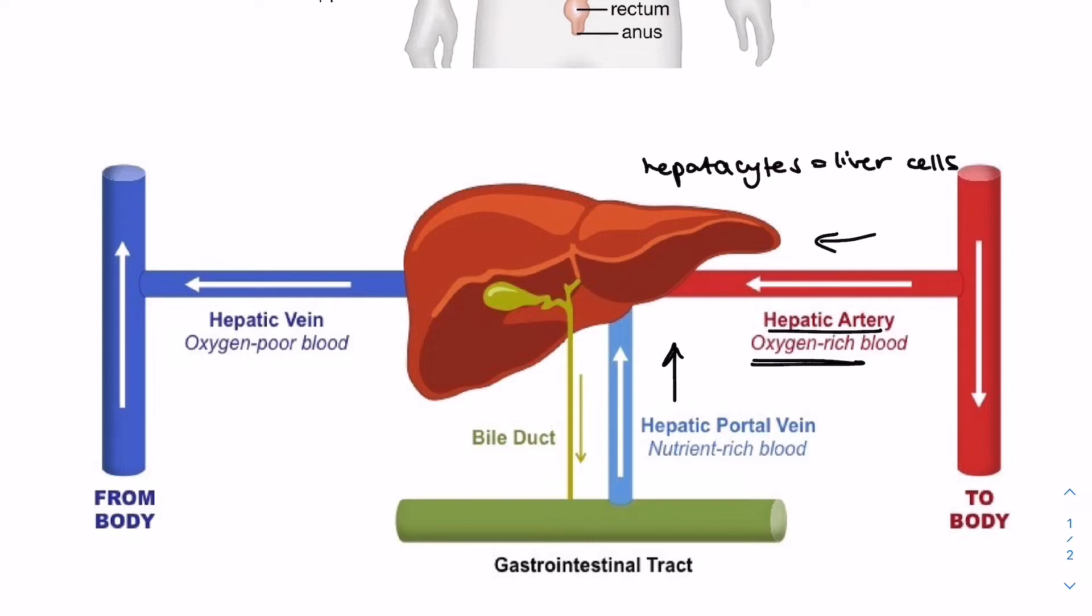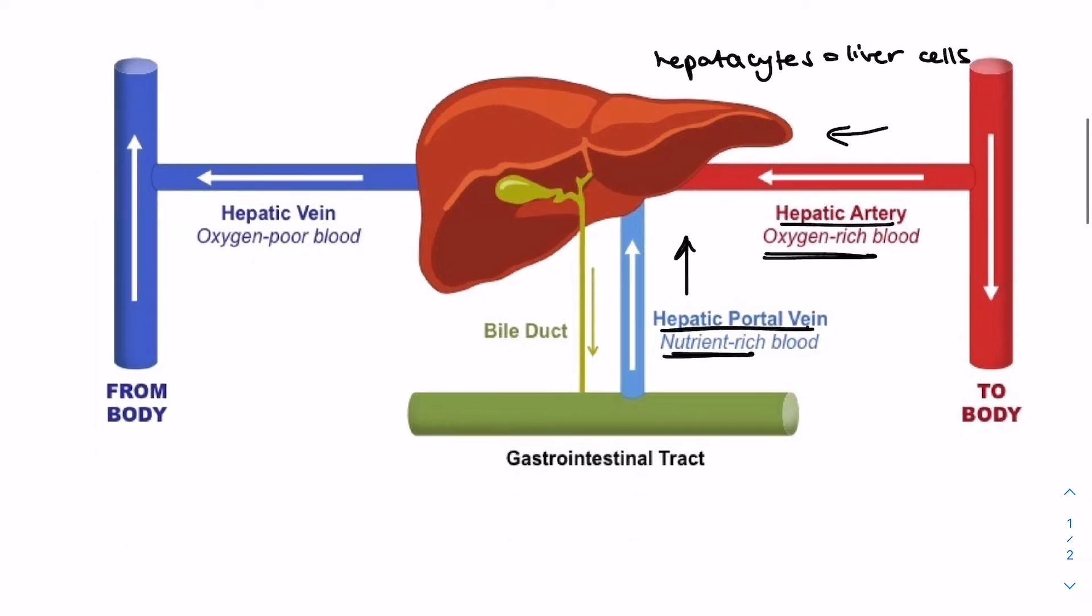Secondly, it receives blood from the hepatic portal vein, and this is nutrient-rich blood. So this blood actually comes from the rich capillary supply in our small intestine.